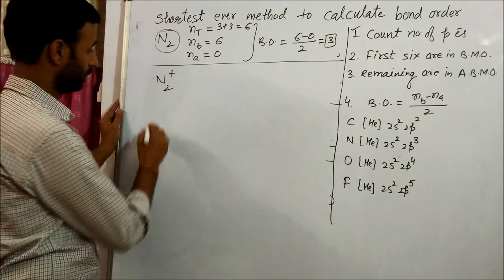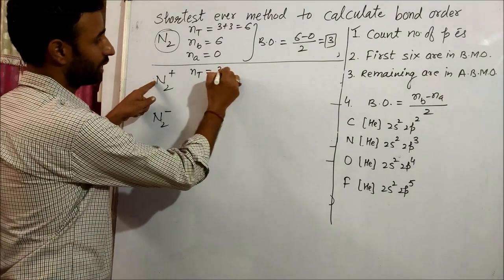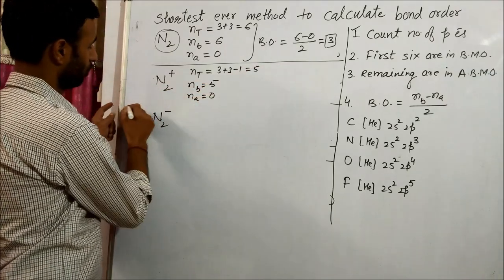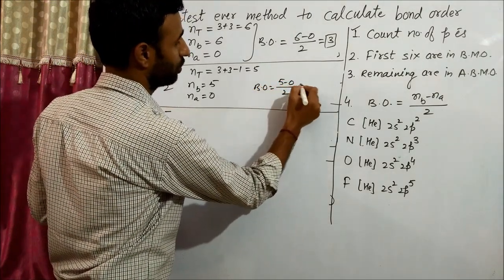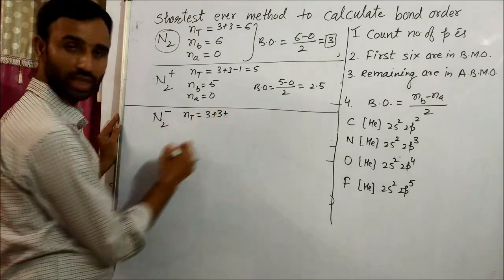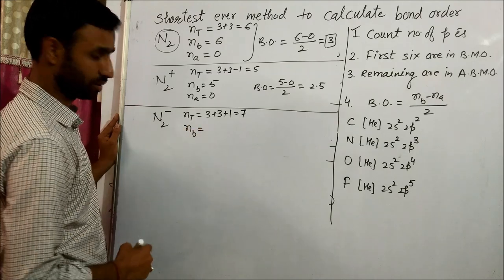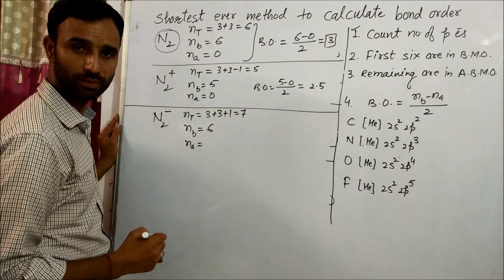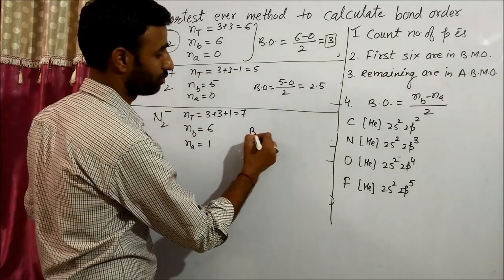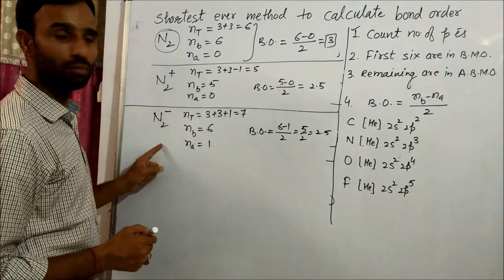Now compare N2+, N2, and N2-. In N2+: three plus three minus one equals five p electrons. Five in bonding, zero in anti-bonding, bond order = (5 - 0) / 2 = 2.5. In N2-: three plus three plus one equals seven total. Six are in bonding and one in anti-bonding, bond order = (6 - 1) / 2 = 2.5. Interestingly, N2+ and N2- both have the same bond order of 2.5, but for different reasons.